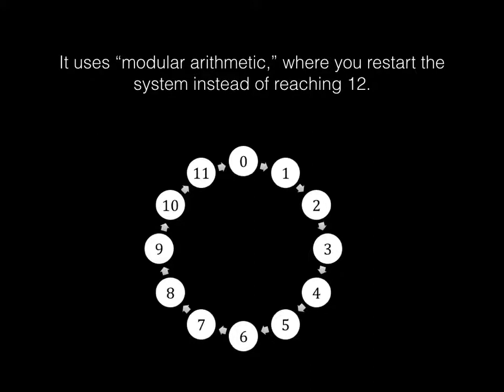So it uses modular arithmetic, which is where you restart the system instead of reaching 12. So instead of reaching 12 after 11, you restart at zero.